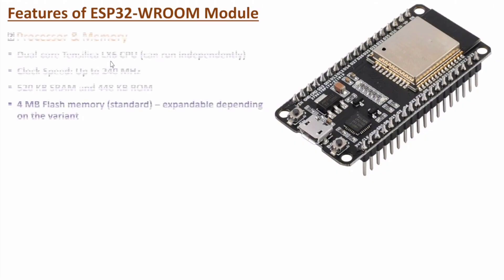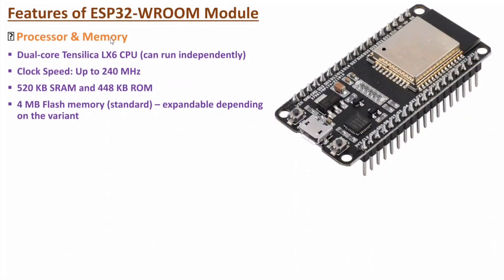The first feature is with respect to processor and available memory. With ESP32 WROOM module, we have a dual core Xtensa LX6 CPU that can run independently. Here we have a clock speed up to 240 MHz. Here we have 520 KB of SRAM and 448 KB of ROM. One can have 4 MB of flash memory, which is expandable depending on the variant, and this 4 MB flash memory can be used for programming purposes.